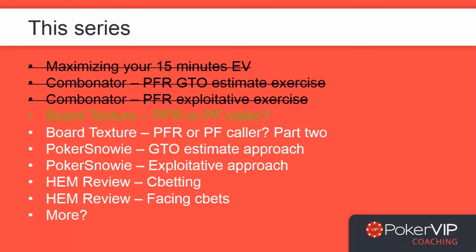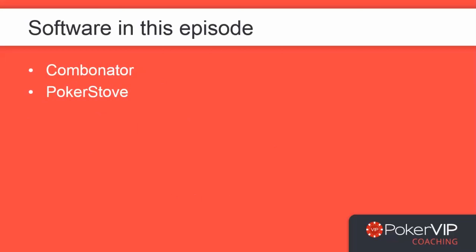Today we're going for a slightly less detailed view — more of a 'how can we look at a lot of different board textures and begin to get a sense post-flop of knowing when to c-bet and when not to c-bet.' In this episode we're going to be using Combinator again and Poker Stove as well. The Poker Stove site has gone down last I checked, but there are sources where you can download the software — you can also use Equilab or other equity calculators. I use Poker Stove because it's really simple.